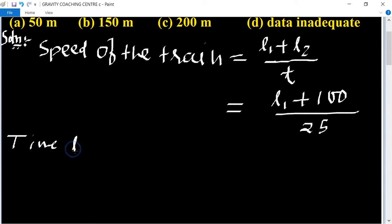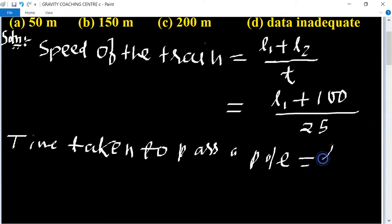Time taken to pass a pole equals L by speed of the train. So length is L1 and S is L1 plus 100 by 25.